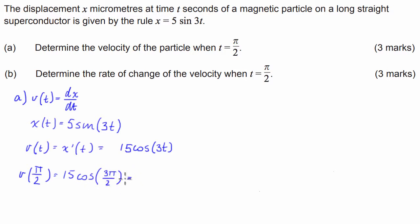Now hopefully you guys are aware that cosine of 3 pi on 2 is equal to 0, so here we have just 15 times 0, which is equal to 0. So v at pi over 2 is equal to 0.